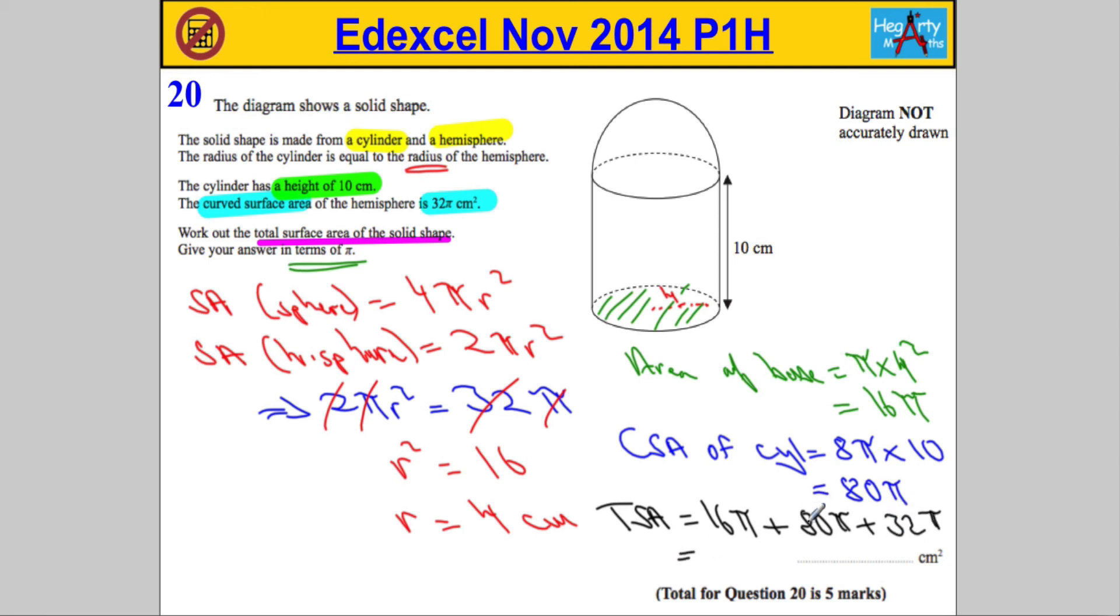Adding those together, 80 and 32 is going to give me 112, 128π. So the total surface area is 128π, and that should be enough to get you the full five marks.